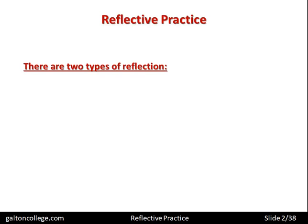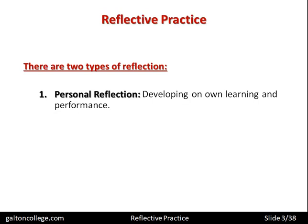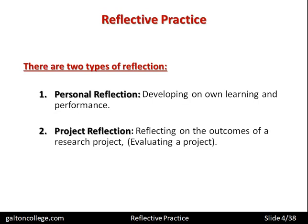There are two types of reflection. The first is personal reflection — developing our own learning and performance. This is very much within us; it's our own reflection, our own developing of learning and performance through thinking about the issues, trying various alternatives, going away, and thinking about it again. The second is project reflection — reflecting on the outcomes of a research project, for example evaluating a project in a dissertation or academic piece of work.